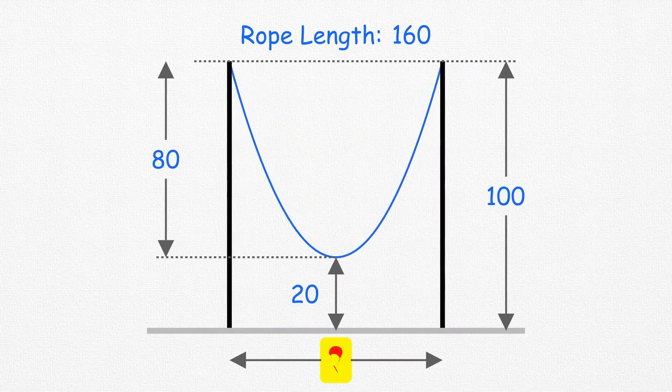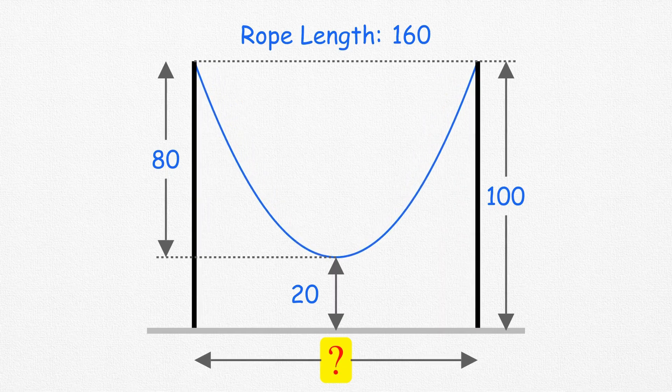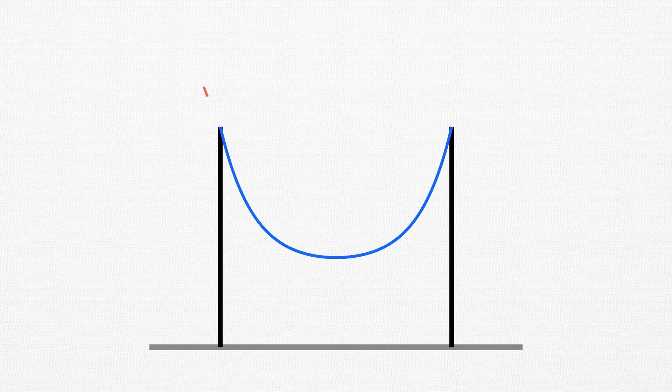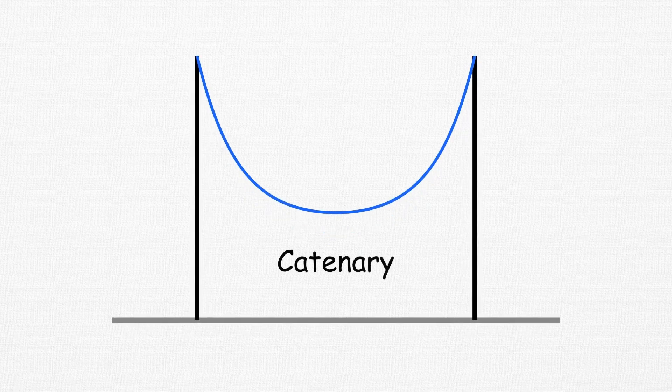But many of you were curious about the general case. So, let's dive straight into it. First of all, the shape formed by the hanging wire is not a parabola, nor is it an arc of a circle. It's something far more fascinating, a catenary.